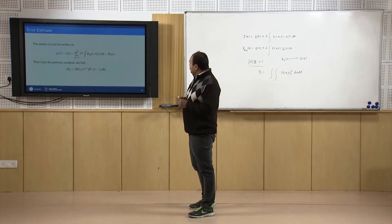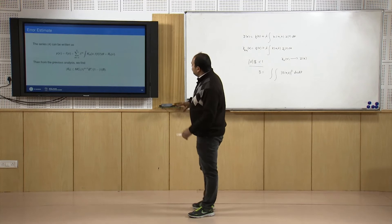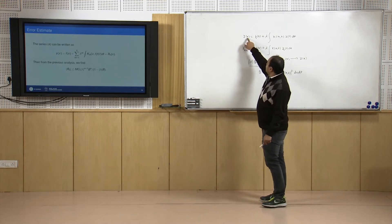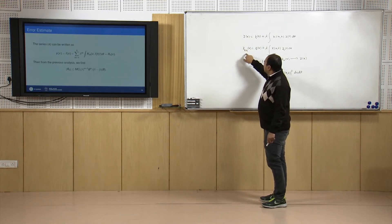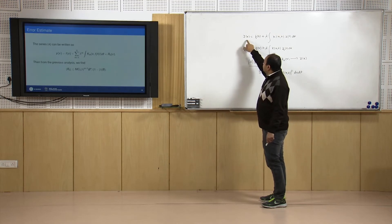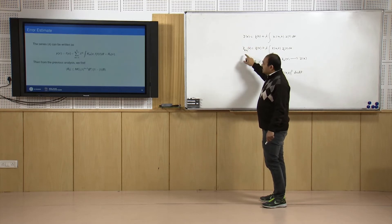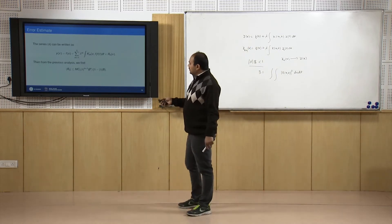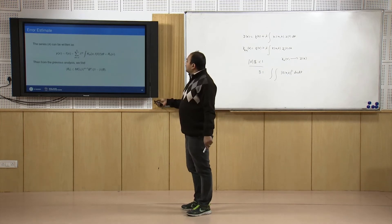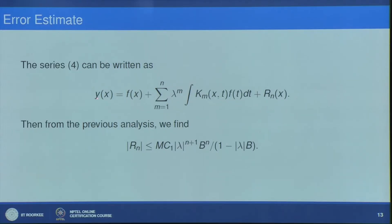Now we want to show that if we approximate the solution by the (n+1)-th approximation, there should be a truncation error. We try to see what the truncation error should be. We write y(x) = f(x) + Σ_{m=1}^{n} λ^m ∫k_m(x,t) f(t) dt, plus a remainder R_n(x) after the (n+1)-th term.